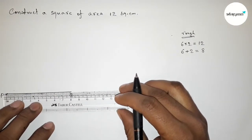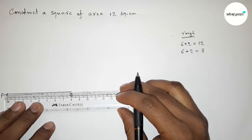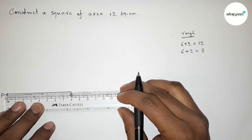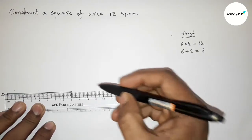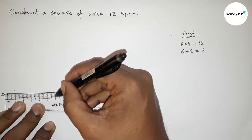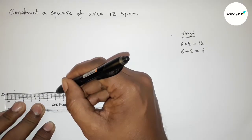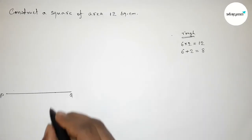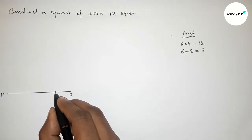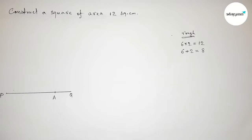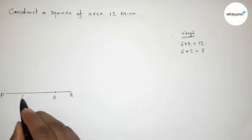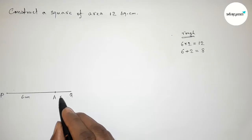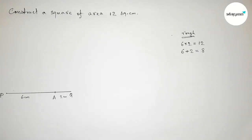Next we have to divide the line PQ in the ratio six to two. With the help of a scale, marking six centimeters from point P — so PA equals six centimeters, and the remaining part AQ equals two centimeters. Taking point A at this mark.